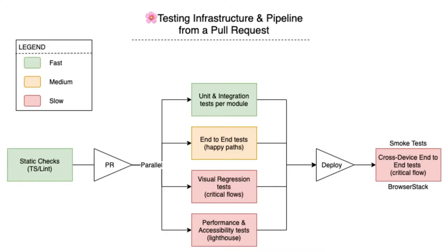Our testing suite is pretty robust and has been ongoing for the past couple of years. We have unit tests, end-to-end tests, and integration tests — using Jest Testing Library for React. Then we have Cypress, which uses Chrome under the hood for our end-to-end and visual regression tests. And we use BrowserStack for smoke tests for cross-device and cross-browser testing as well.